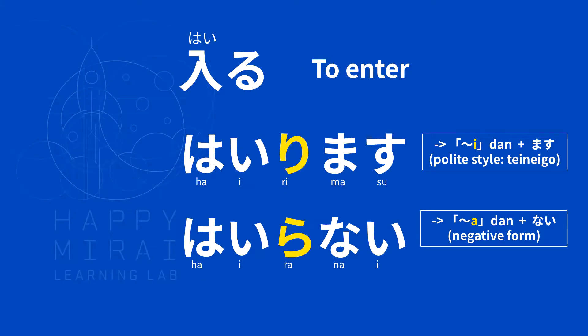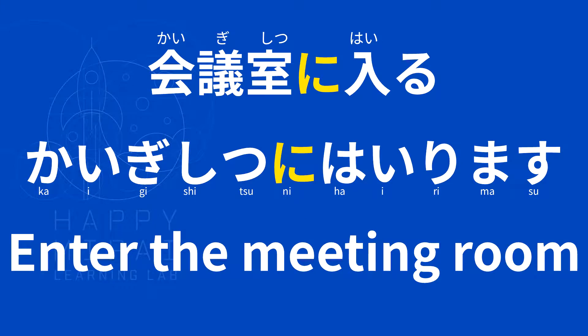Next verb: 入る (hairu) — to enter. 入ります (hairimasu). 入らない (hairanai). Example: 会議室に入る (kaigishitsu ni hairu) — 会議室に入ります (kaigishitsu ni hairimasu) — enter the meeting room.